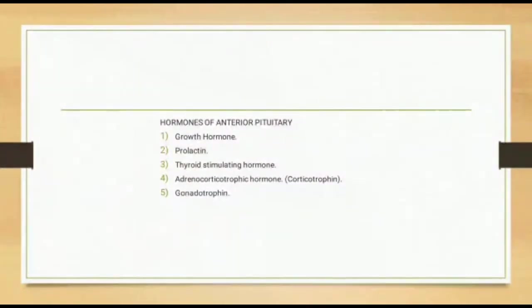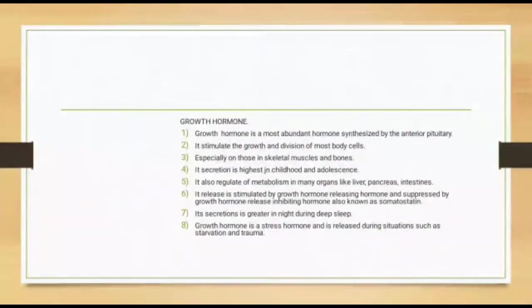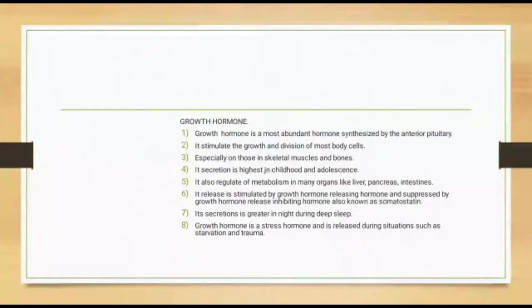Growth hormone is the most abundant hormone synthesized by the anterior pituitary. It stimulates the growth and division of most body cells, especially those in skeletal muscles and bones. Its secretion is highest during childhood and adolescence.